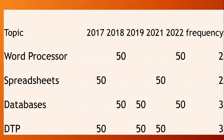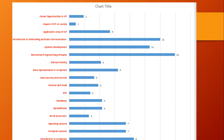In paper 2, the topics tested are usually word processor, spreadsheet, databases, and DTP. In word processor we use Microsoft Word, spreadsheet uses Excel, database uses Microsoft Access, and DTP uses MS Publisher or Adobe PageMaker. Word processor has a frequency of 2, spreadsheet 2, database 3, and DTP 3, showing how marks have been distributed.